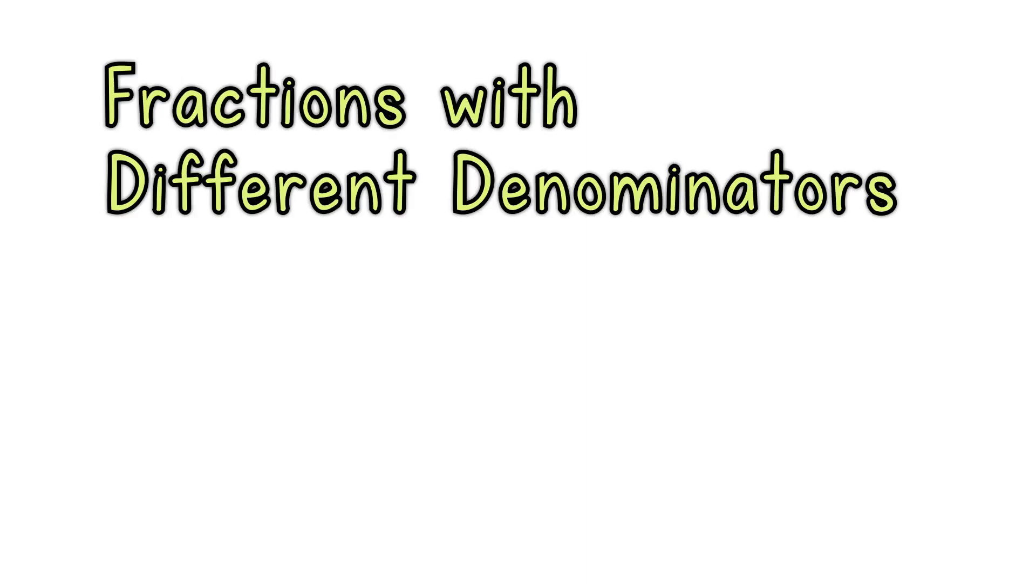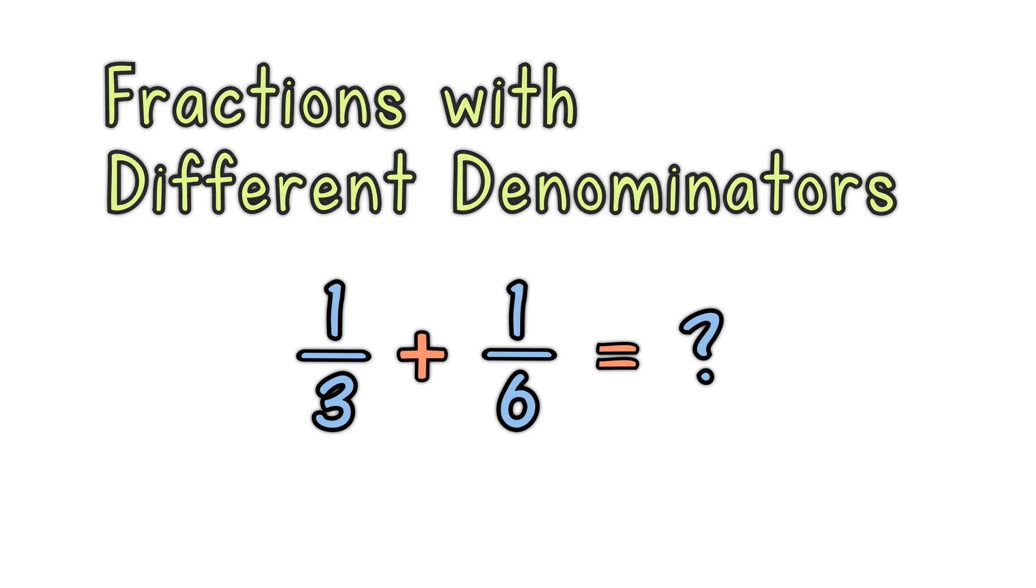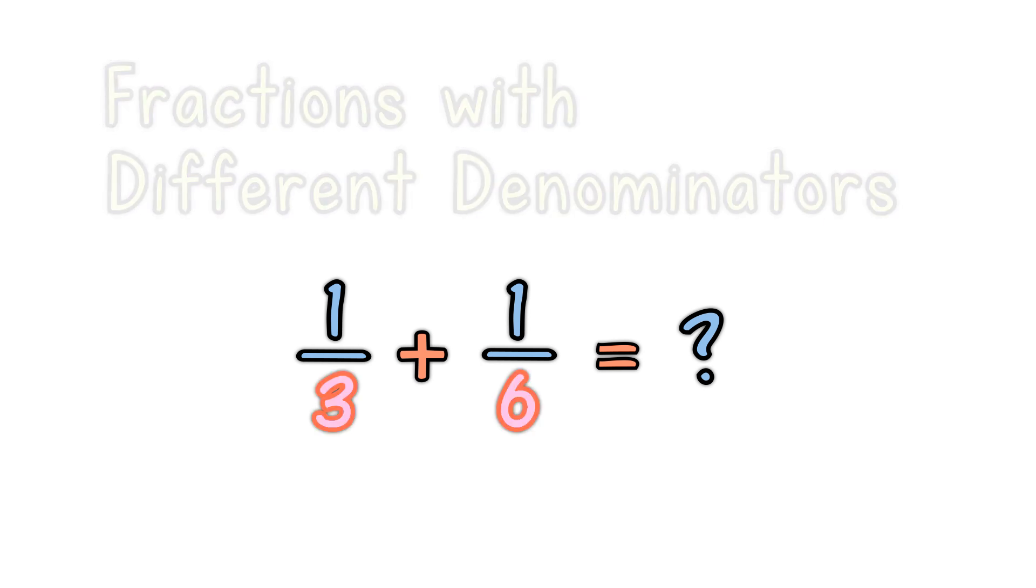Fractions with different denominators. You can't add fractions with different denominators. One-third plus one-sixth equals what? So, how can they be added? You need to make the denominators the same.